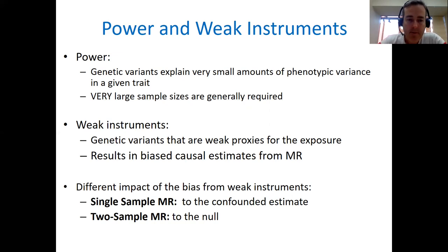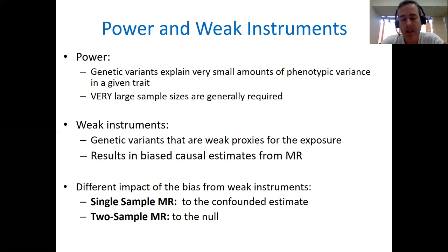Interestingly, the effect of weak instrument bias depends on whether you're performing a single-sample or a two-sample MR study. In single-sample MR, the direction of bias is towards the confounded estimate. So if there's no causal association actually present, but there is a confounded phenotypic association, then your estimate of the causal effect will be biased towards the phenotypic association.